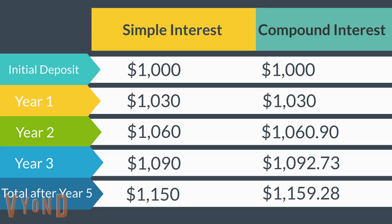Compound interest on $1,000 would be $30 the first year, and then $30.90 the second year, and then $31.83 the third year, and so on. At the end of five years, you would have $1,150 in simple interest, or $1,159.28 of compound interest. So you may be thinking, big deal — I earned an extra $9.28 in five years.